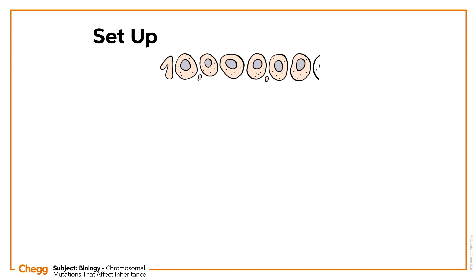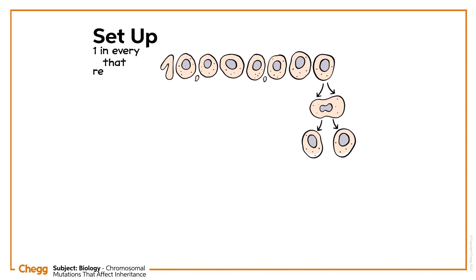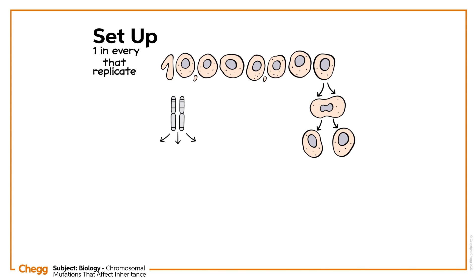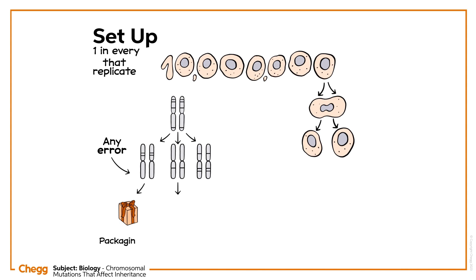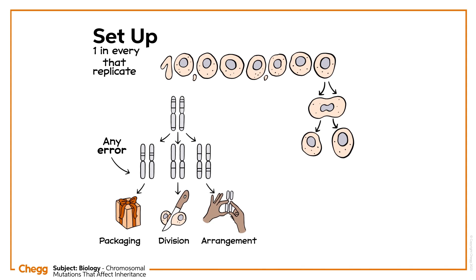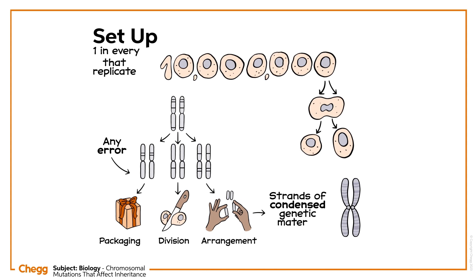Chromosomal mutations take place in one in every 10 million cells that replicate. These mutations are caused by any error in the packaging, division or arrangement of the chromosomes, which are strands of condensed genetic material.